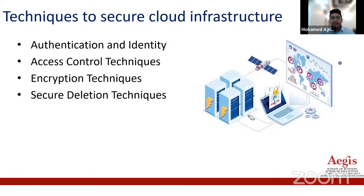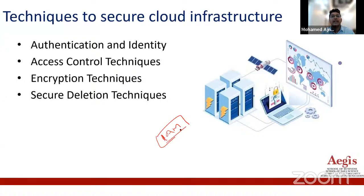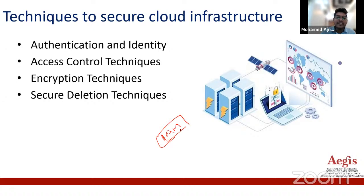First — authentication and identity. If you are using AWS, there is a feature called IAM — Identity Access Management. You should enable this feature in your AWS. You can create users, set up passwords for them, and give them limited access. They can only store data, and if they want to delete data they have to request the system admin. You can also enable MFA — Multi-Factor Authentication — as an access control technique.